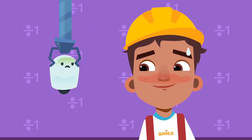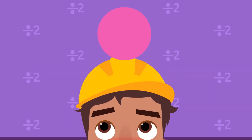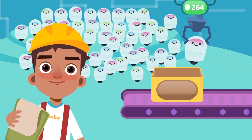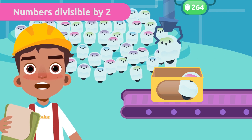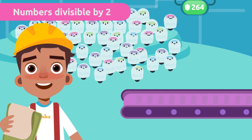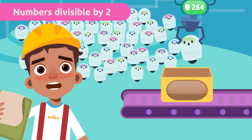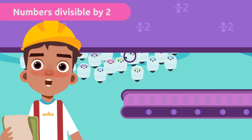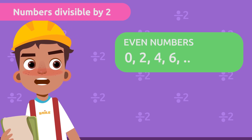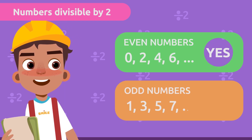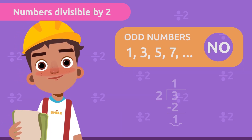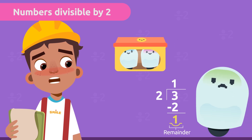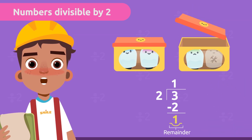Let's go solve our robot problem. Numbers divisible by two. As you see, there are 264 robots, and I want to put two robots in each box. We need to know if all the boxes will be full or if there will be robots left over. It's very easy to figure out — we can use the divisibility rule of two. If it's an even number, it's divisible by two, and if it's an odd number, it isn't divisible by two. The remainder is one, which is the number of robots left over. That means we will have one robot left over and we would have to make one more to fill the box.